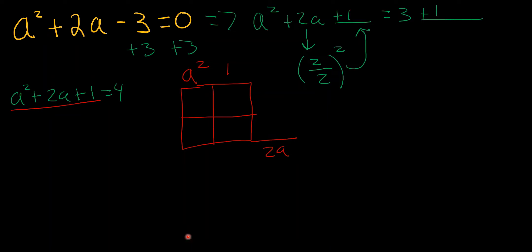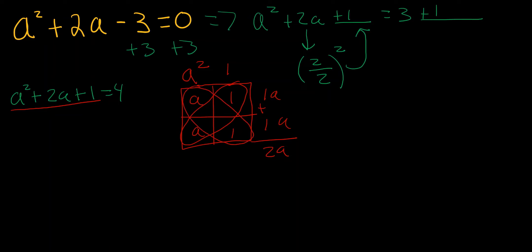The goal of the magic box is that these two terms multiply to give you a², these two terms multiply to give you 1, and the horizontal products add up to give you 2a. So a and a give you a², 1 times 1 gives you 1, a times 1 is 1a, and a times 1 is 1a — so 1a + 1a gives you 2a. Therefore, this factors to (a + 1)(a + 1).